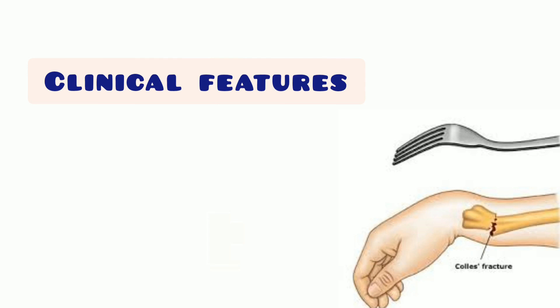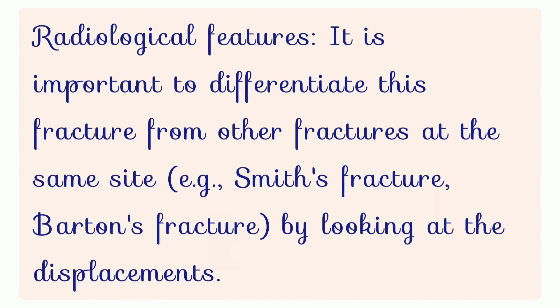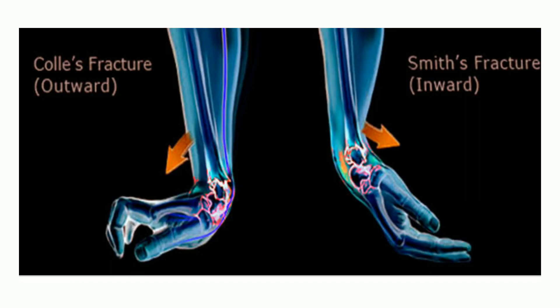The radial styloid process comes to lie at the same level or slightly higher than the ulnar styloid process. Regarding radiological features, it is important to differentiate Colles' fracture from other fractures at the same site — Smith's fracture and Barton's fracture — by looking at the displacements. The dorsal tilt can be detected by looking at the direction of the distal articular surface of the radius on the lateral X-ray.